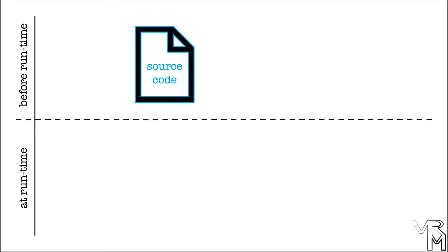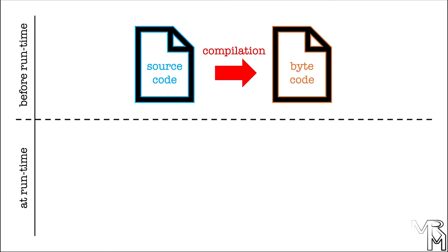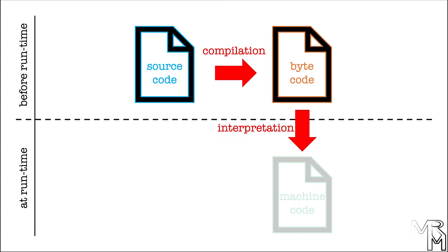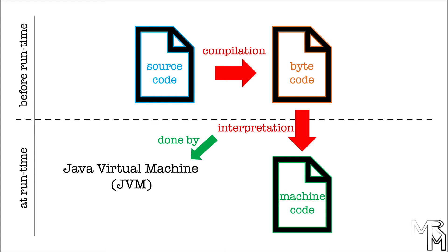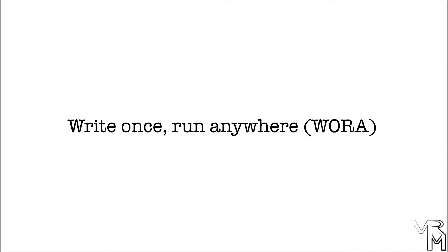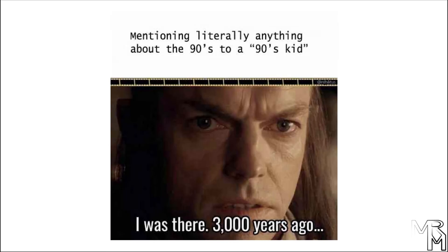Now, why is this important? Normally, when you create a program, it's either compiled or interpreted, but not Java, which makes it somewhat special. A source code written in Java is first compiled into an intermediate language called bytecode, which is then interpreted at runtime into machine code. This means that to run a Java program, we need additional software that will do the interpretation. This software is called Java Virtual Machine, or JVM. While this means that you do need to have JVM installed to run a Java program, it also means that you can run the same Java program on multiple platforms, as long as there is a JVM version for that platform. In fact, "write once, run anywhere" was Java's slogan created back in the 90s.